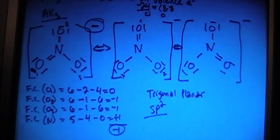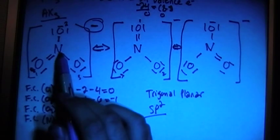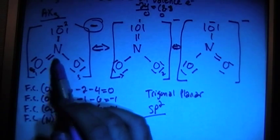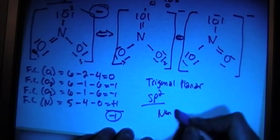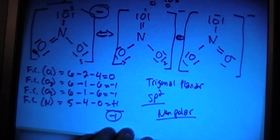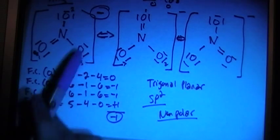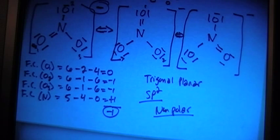And in this case, because each of the three items that are being bonded to the nitrogen, since they are all the same, this is going to be a non-polar molecule. Because all of the net dipole moments are going to cancel each other out, because they are all from the same atom. They're all from oxygen.